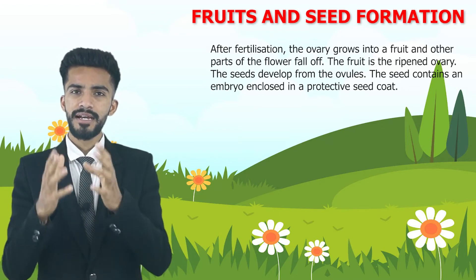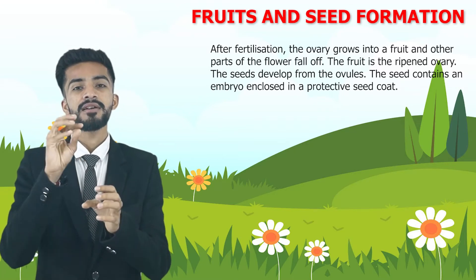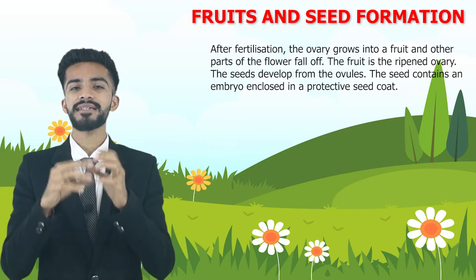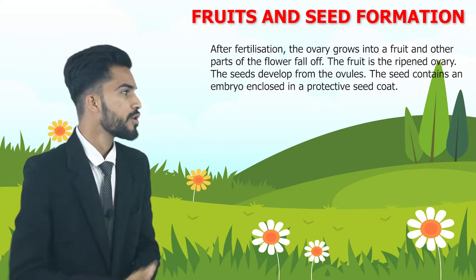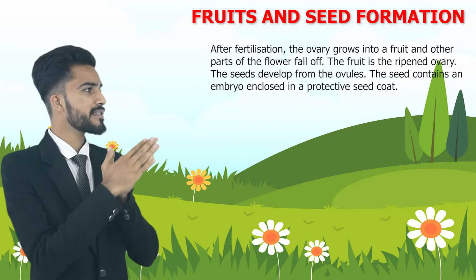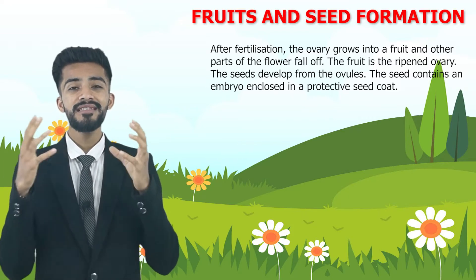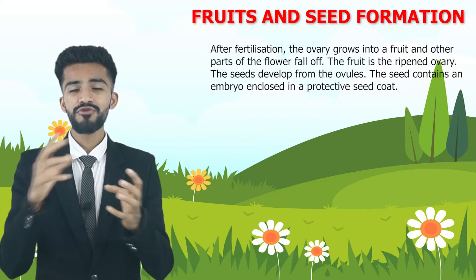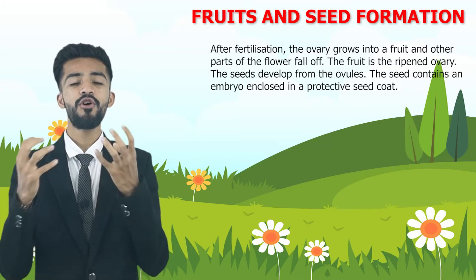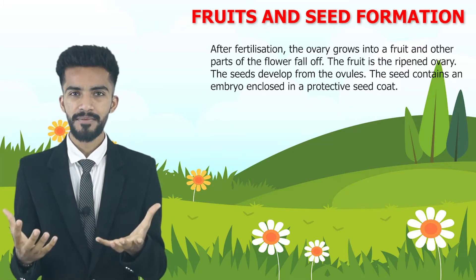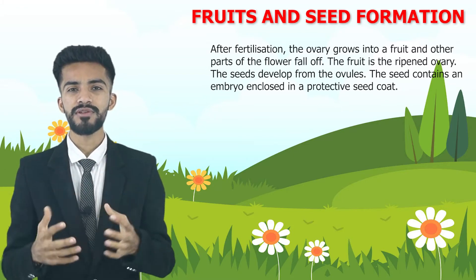So, after fertilization, zygote forms, ovary forms, and from the ovary the fruit forms. The fruit is the ripened ovary. The fruit is nothing but a ripened ovary — it has been formed from the ovary itself. That's why the fruit is a ripened ovary.